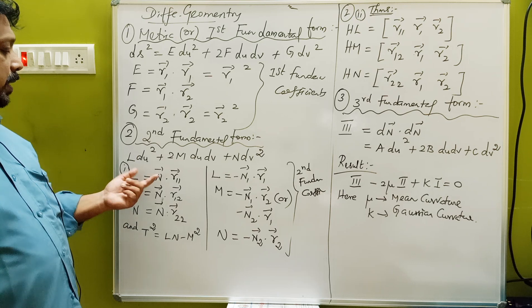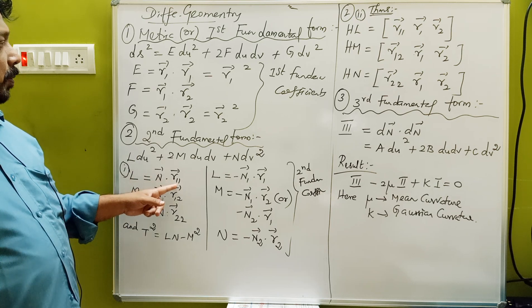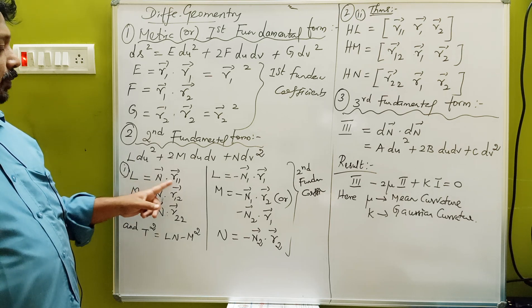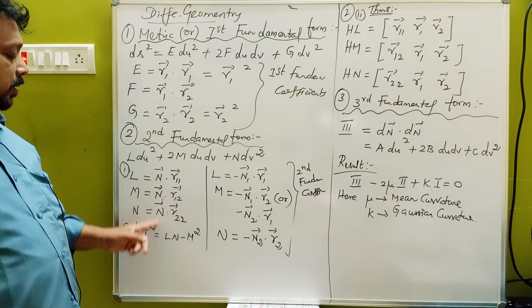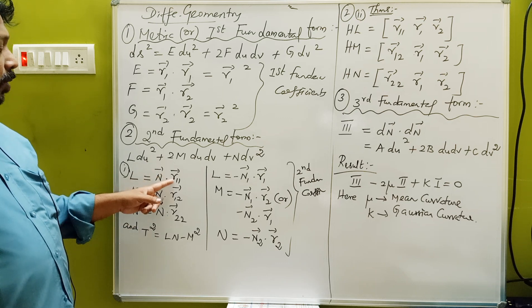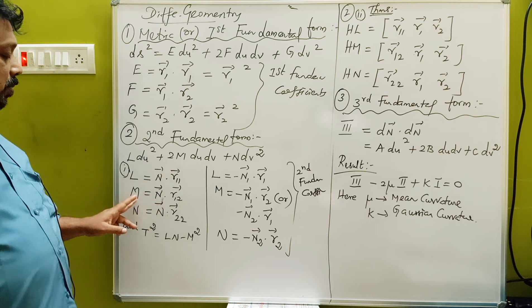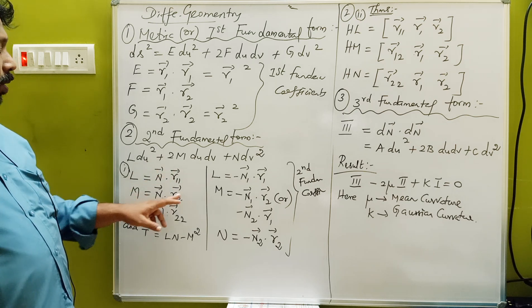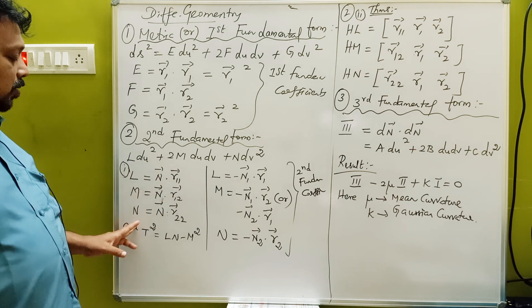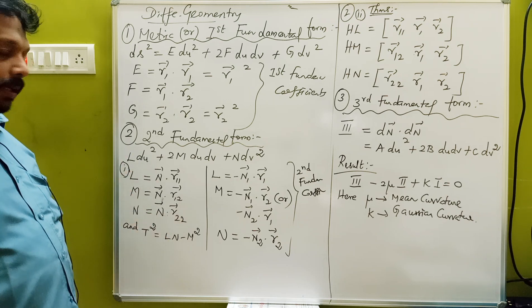The second fundamental theorem is L·du² plus 2M·du·dv plus N·dv². So we will use L, M and N. So we will use this concept. L is the same as R11 hat. R1. Here is R11 hat. M is the same as R12 hat. And N is the same as R22 hat.